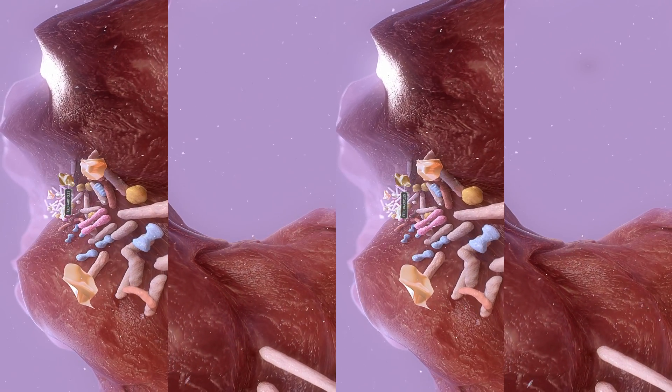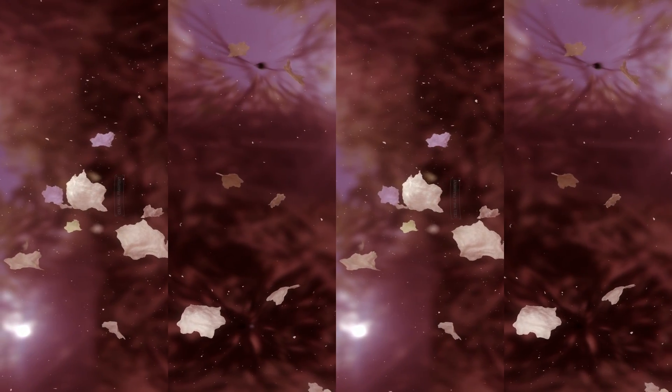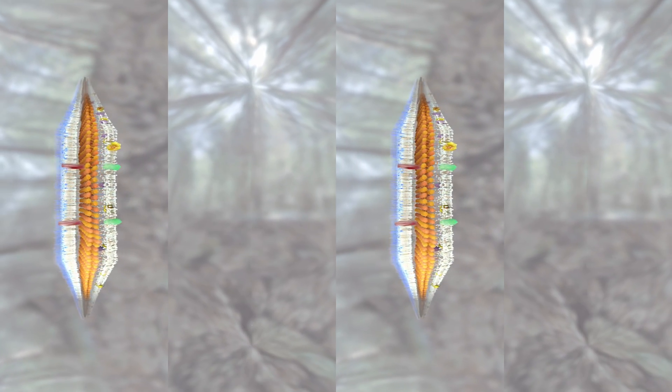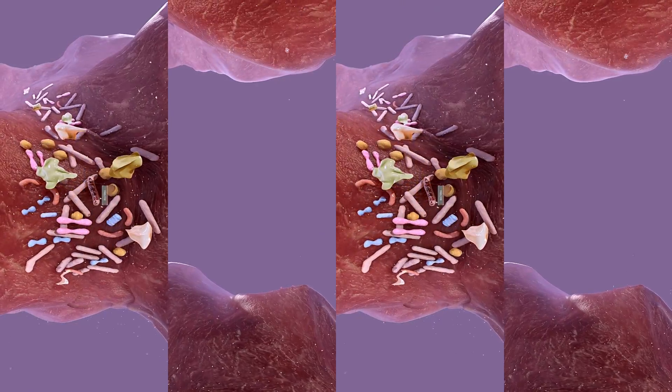Both normal bacterial cell division and death release cell wall fragments. Gram positive and negative bacteria contain the structural polymer peptidoglycan or PGN. Bacterial cell wall fragments containing PGN are released into the gut lumen where they can interact with the surface of the gut wall.